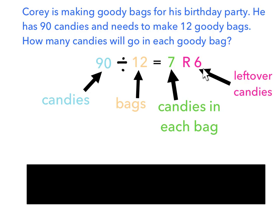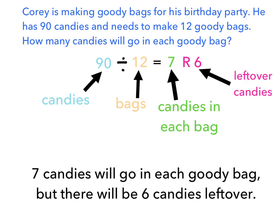The remainder 6 are the leftover candies that will not go in any goody bag. So in this case, to interpret the equation, 7 candies will go in each goody bag, but there will be 6 candies left over.